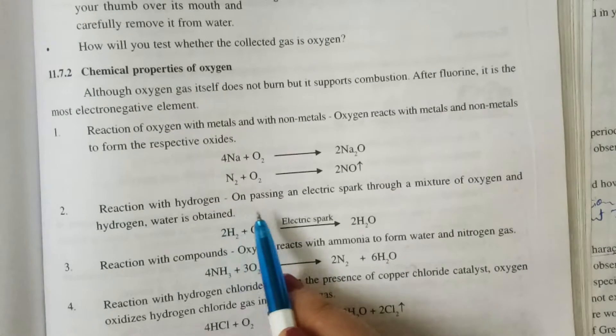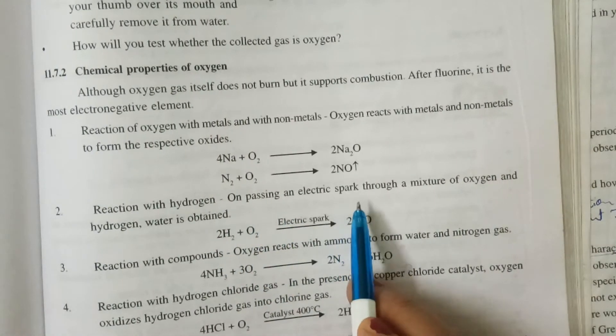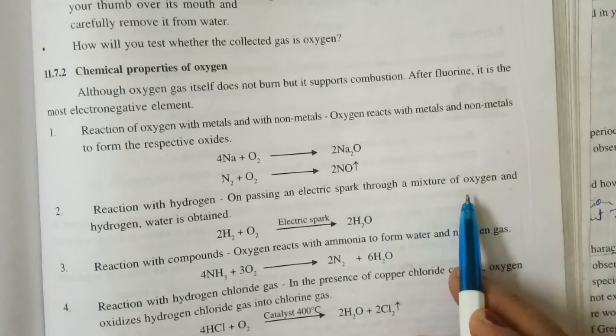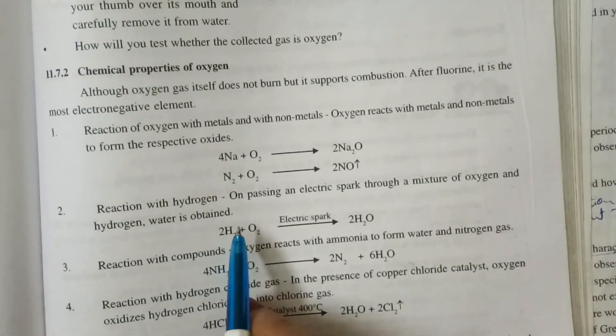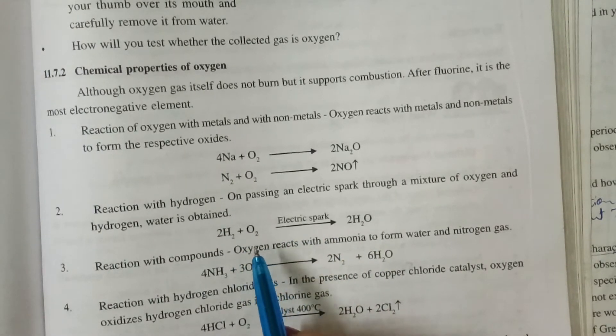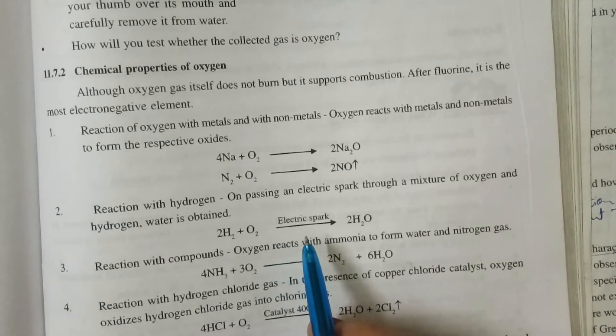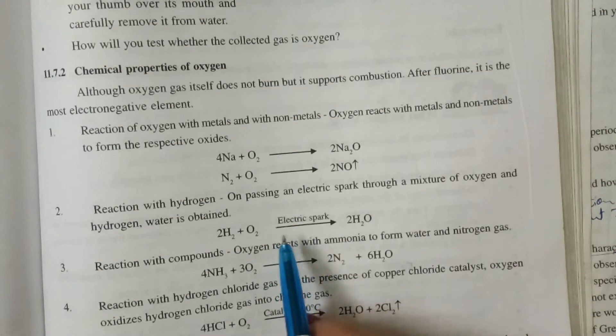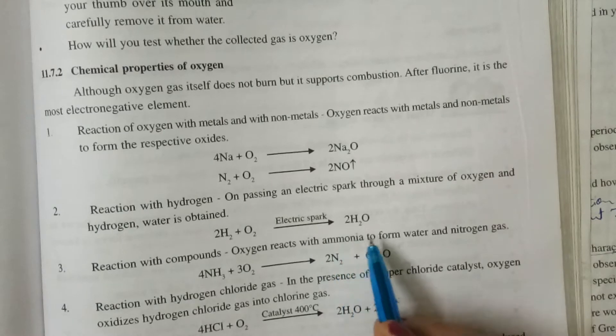Reaction with hydrogen. On passing electric spark through a mixture of oxygen and hydrogen, water is obtained. At normal temperature, O2 and H2 does not react with each other. But when electric spark is passed, then water is formed.